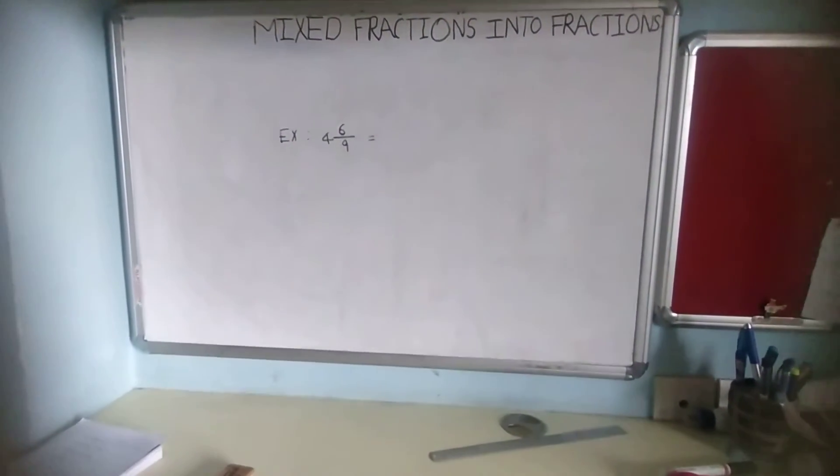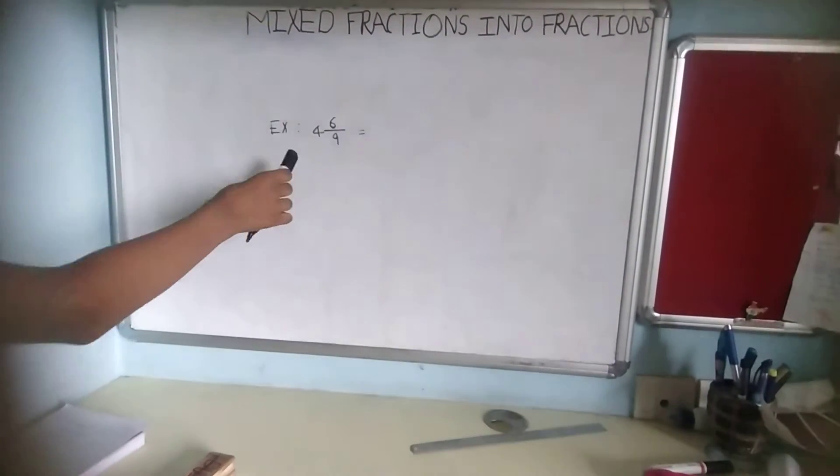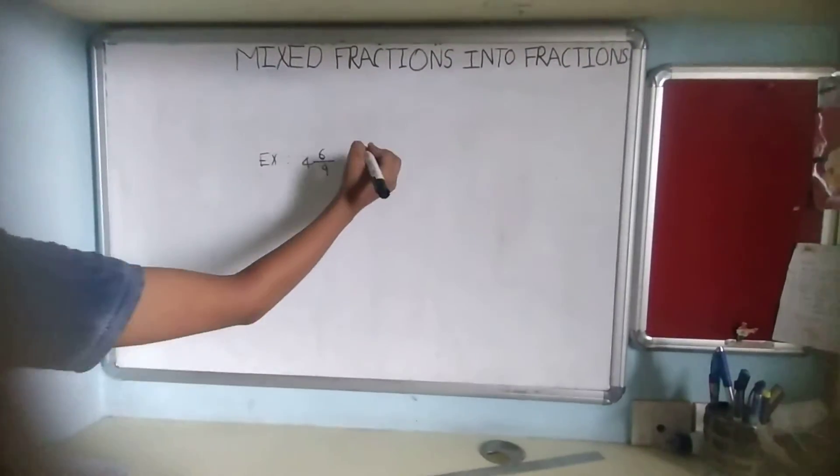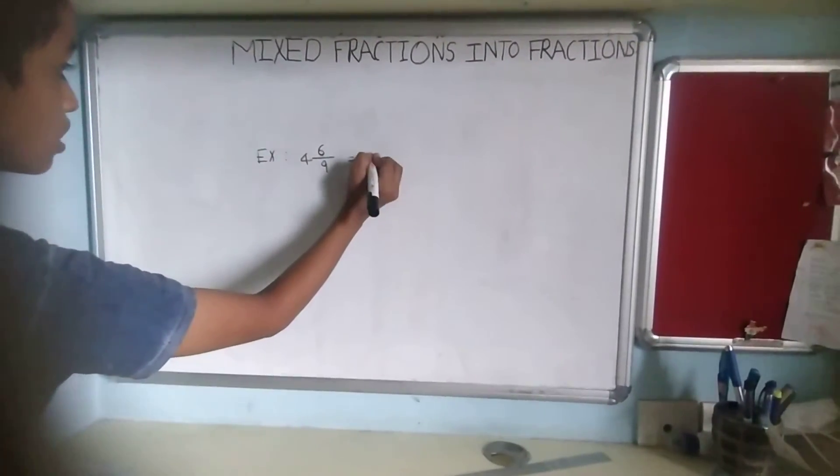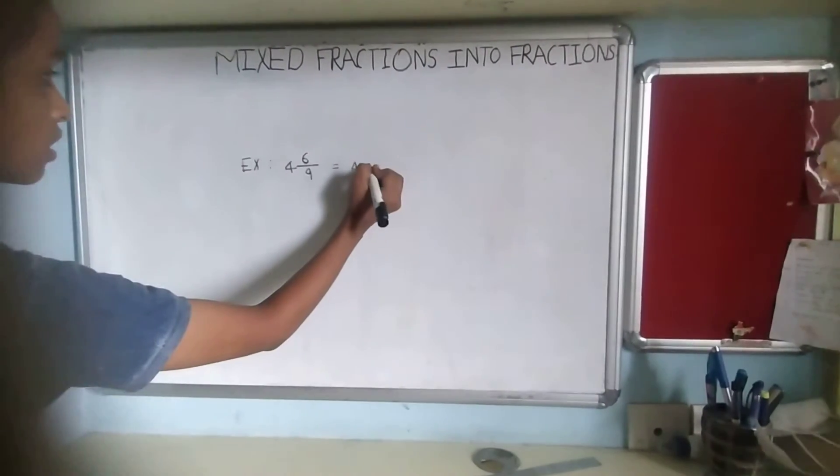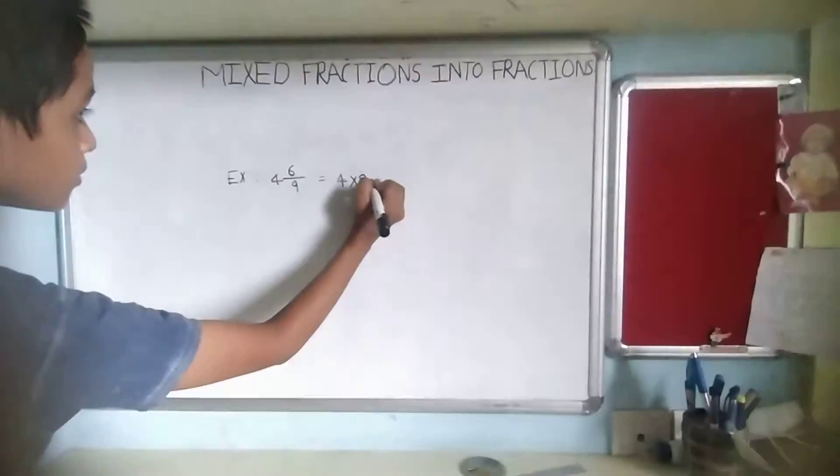Now our first example is 4 and 6 by 9. First we will multiply these two numbers and add these two numbers. Now first I will write here 4, 4 multiplied by 9 plus 6.